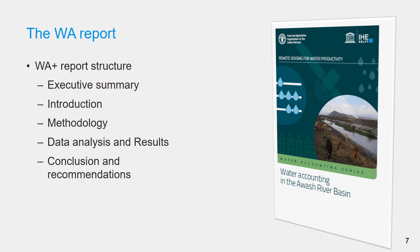The reporting structure may be based on personal interest from the people or organization compiling the report, or the claimed interest, or both. However, the water accounting report should include the following basic sections: executive summary, introduction, methodology, data analysis and results, and conclusions.